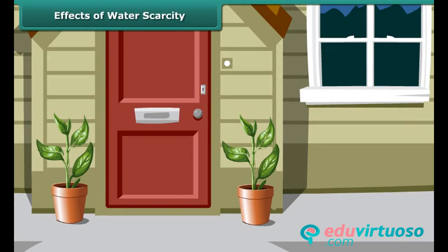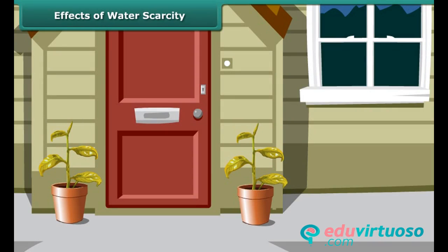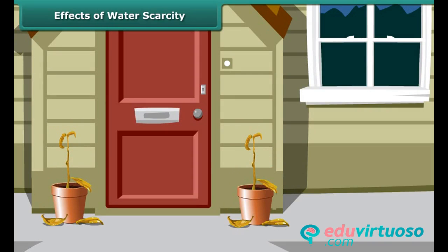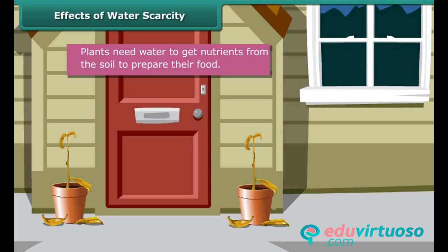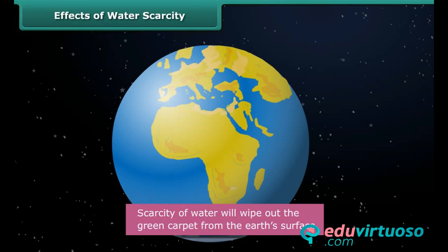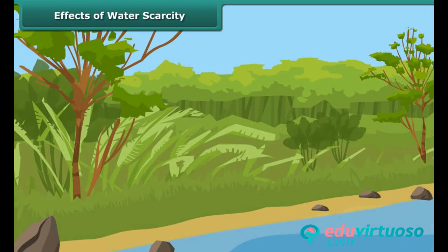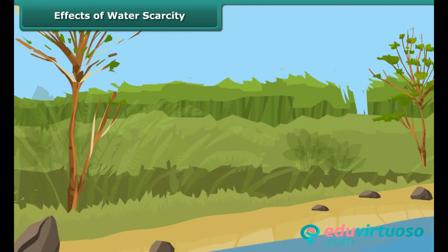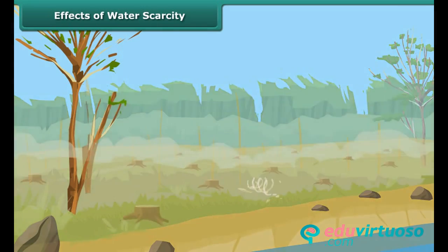When plants do not receive water for an extended period, they wilt and ultimately die. Plants need water to get nutrients from the soil and to prepare their food. Scarcity of water will wipe out the green carpet from the earth's surface, resulting in less rainfall and reduced oxygen supply. Loss of plants and trees also means loss of food. Thus, prolonged scarcity of water will make survival of every life form impossible on earth.